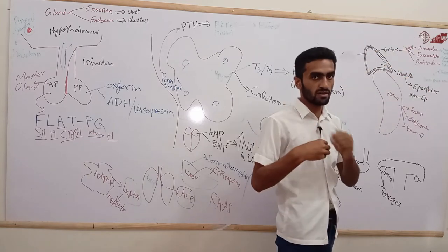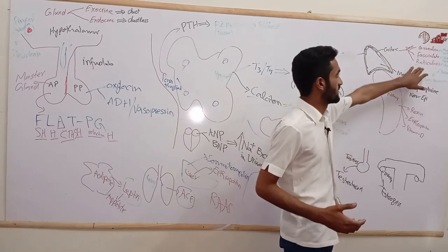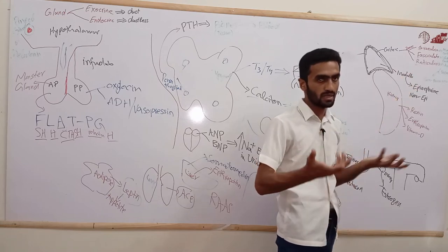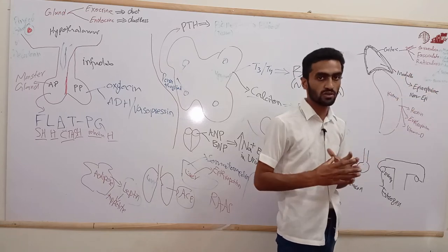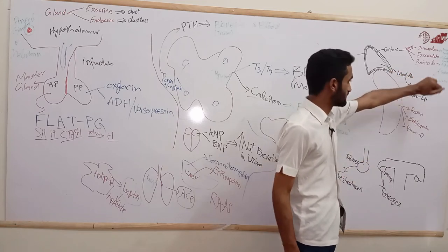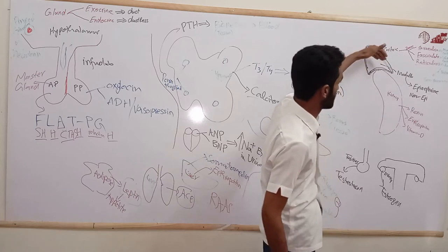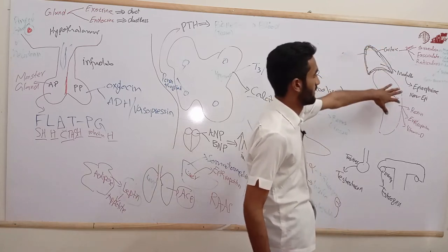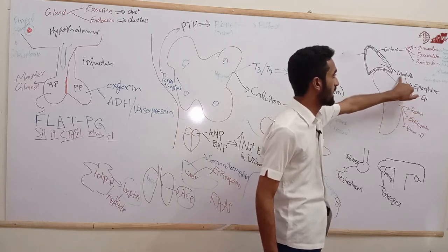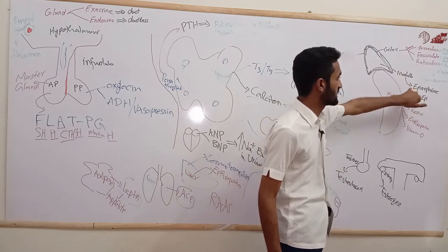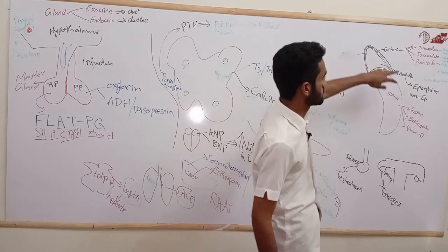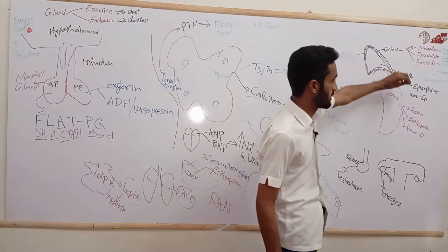Glomerulosa secretes mineralocorticoids, maintaining sodium and potassium concentration. Fasciculata secretes glucocorticoids, maintaining glucose metabolism. Reticularis secretes androgens, mainly testosterone, controlling sex hormones. The medulla — remember MEN: Medulla, Epinephrine, and Norepinephrine — secretes epinephrine and norepinephrine, important in the sympathetic autonomic nervous system.